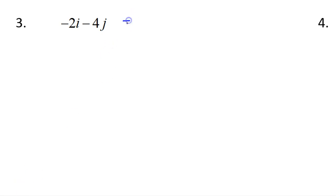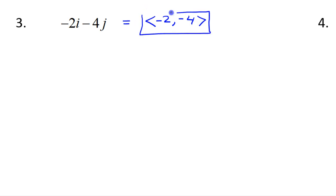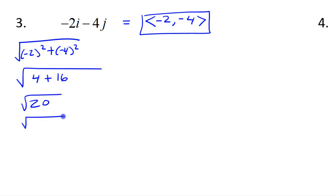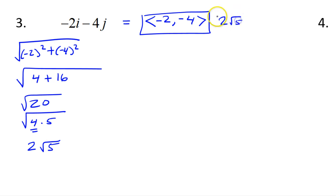For number 3, the component form is (-2, -4). The magnitude is the square root of (-2)² + (-4)² = the square root of 4 + 16 = the square root of 20. Since 20 = 4 × 5 and 4 is a perfect square, this simplifies to 2√5.